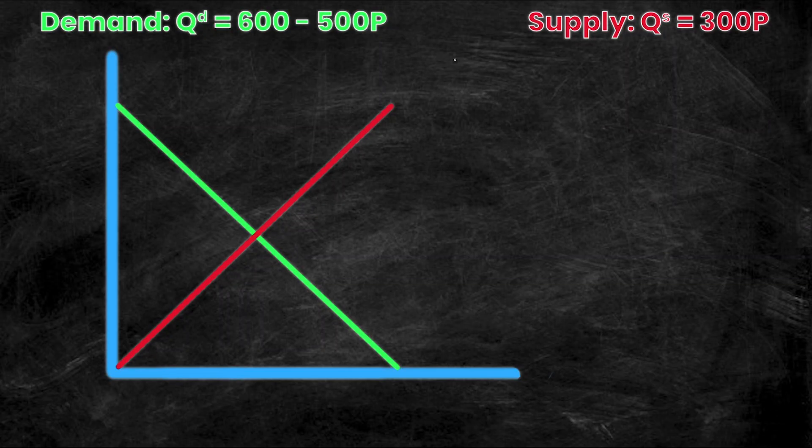So we have our demand equation on the left and our supply equation on the right. So we'll use our method to calculate Q and P star. If you don't know how to do this, we've actually already made a video on this, so feel free to check that one out and we'll link it in the description.